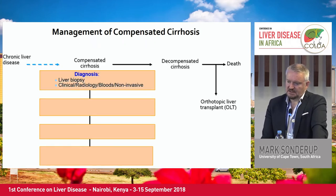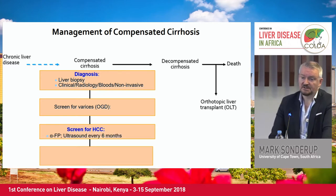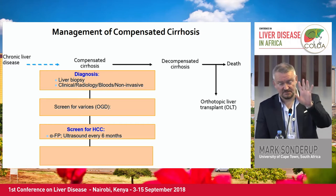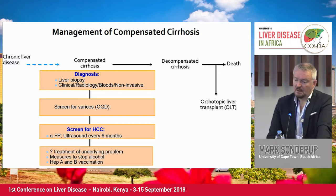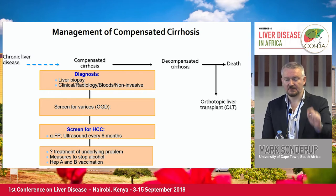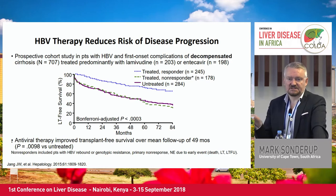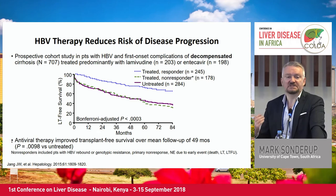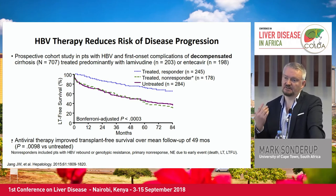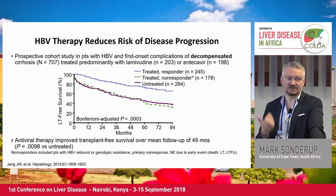In terms of management of compensated cirrhosis: patients need to be screened for esophageal varices and for hepatocellular carcinoma. Most importantly, the key message today is about treating the underlying problem — that is what actually saves you. This is data in patients with decompensated chronic liver disease due to hepatitis B treated with antiviral therapy, either lamivudine or entecavir, showing clearly that if you treat hepatitis B, even once they've decompensated, you can get them back onto that compensated curve.